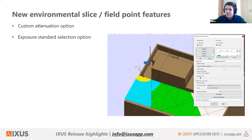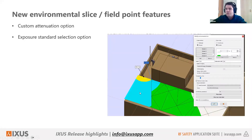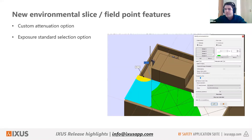The other new feature is the exposure standard selection option. Previously, the environmental slice was locked to the same exposure standard used for the exclusion zone calculation. Now you can change the exposure standard for a specific environmental slice independently. This is useful for clients using the ECNEP 2020 standard, which has both a whole body limit and a local limit. You can now, for example, calculate exclusion zones using the local limit, then use an environmental slice set to the whole body limit and apply spatial averaging.